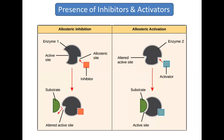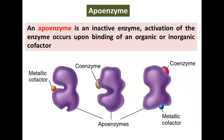These are all the influential factors affecting enzyme activity that we have discussed. Today I also discussed some additional factors. One more concept is the apoenzyme — an apoenzyme is an inactive enzyme. The activation of the enzyme occurs upon the binding of an organic or inorganic cofactor, so the cofactor also acts as an activator.